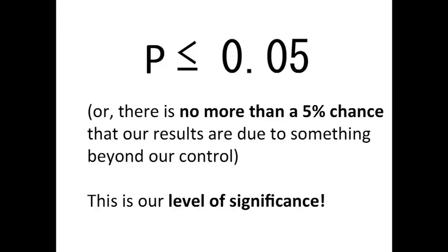So what does this mean? This is what we call our level of significance, and we're going to use this in order to work out whether or not our scores or our results are really significant. Basically, what this means is that there is no more than a 5% chance that our results are due to something beyond our control.